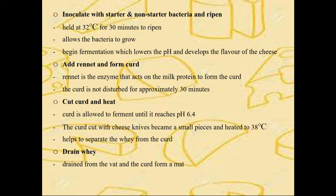Then, the rennet is the enzyme that acts on the milk protein to form the curd. After the rennet is added, the curd is not disturbed for approximately 30 minutes so a firm coagulum forms. The curd is allowed to ferment until it reaches pH 6.4. The curd is then cut with a cheese knife into small pieces and heated to 38 degrees C.